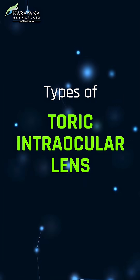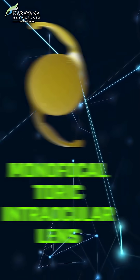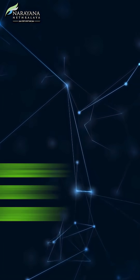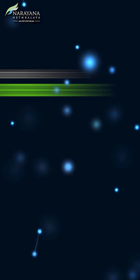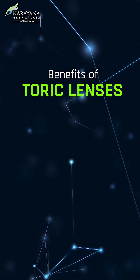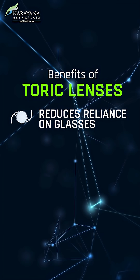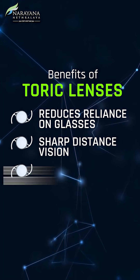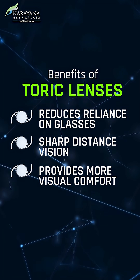Types of toric intraocular lens: we have the monofocal toric intraocular lens and the multifocal intraocular lens. Benefits of toric lens implantation: it reduces the dependency on glasses, improves distance vision, and multifocal toric IOLs also reduce the need for reading glasses.